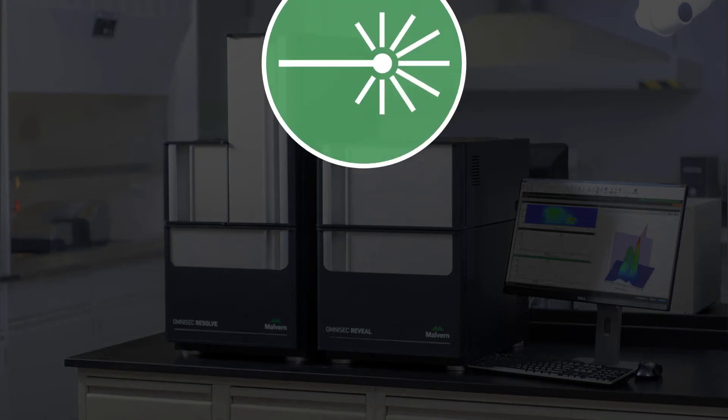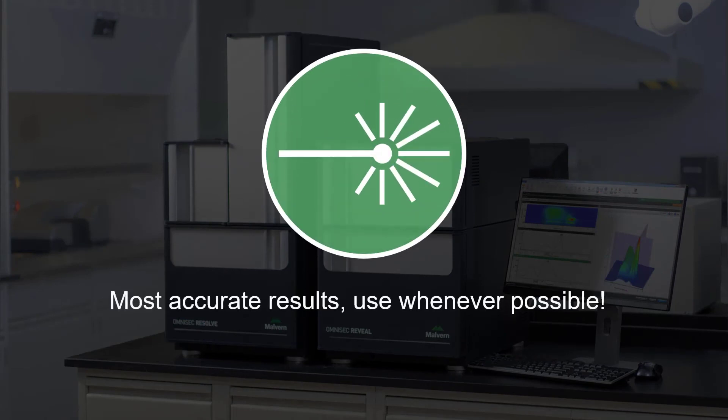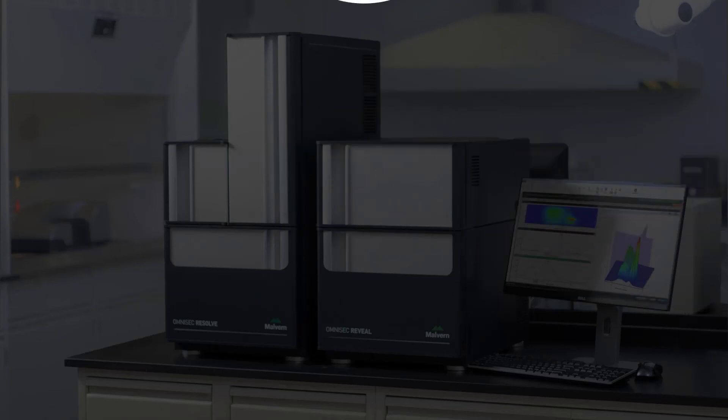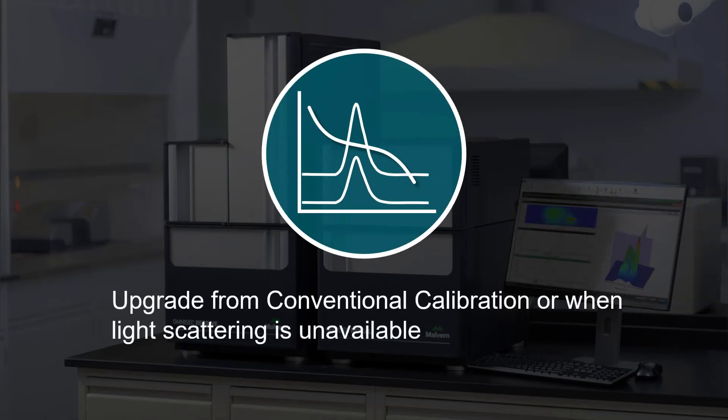So to recap, advanced or triple detection with light scattering offers the most accurate results, and you should use it whenever possible. Universal calibration is a nice upgrade from conventional calibration and a convenient alternative when light scattering is unavailable.